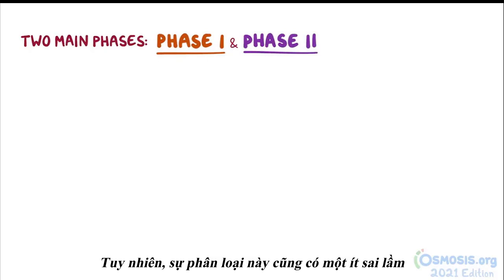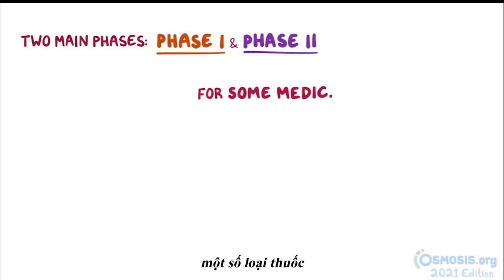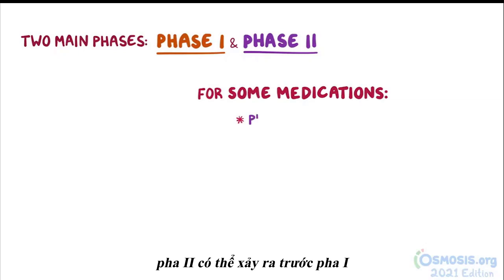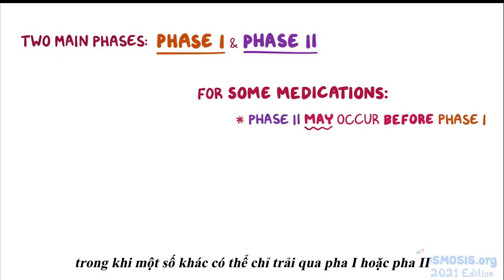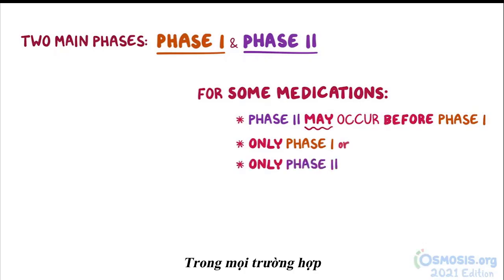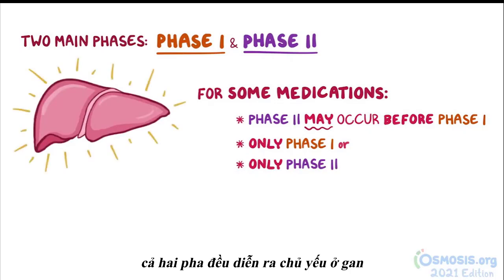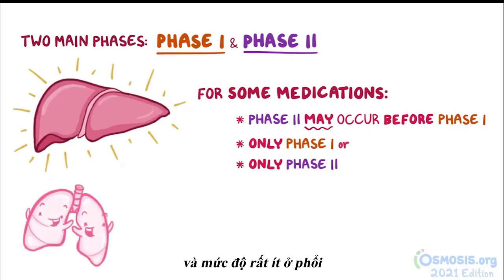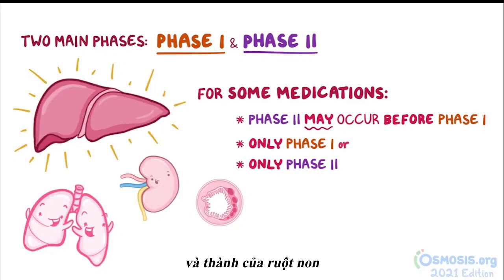This classification is somewhat misleading, though. For some medications, phase 2 may occur before phase 1, while others may undergo only phase 1 or only phase 2. In any case, both phases take place primarily in the liver, and to a much lesser degree in the lungs, kidneys, and the walls of the small intestine.